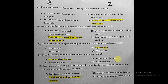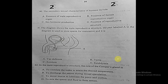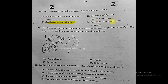Question forty: secondary sexual characteristics of humans include what? The correct answer is sex hormone production, because that is the second stage of sexual development. The presence of male or female reproductive organs are primary characteristics, not secondary.